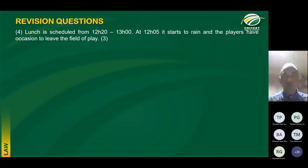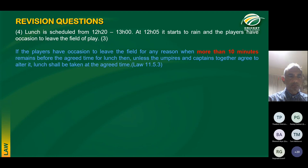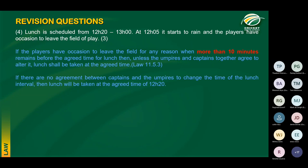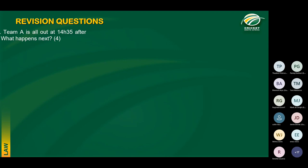Question 4: Lunch again from 12:20 till 13:00, but at 12:05 it starts to rain and the players leave the field — what happens next? The law tells us that if the players need to leave the field for any reason with more than 10 minutes remaining before the agreed time for lunch, lunch shall be taken at the agreed time, unless the umpires and captains together agree to take an early lunch. So unless there is agreement to change the time, lunch shall be taken at the agreed time of 12:20.